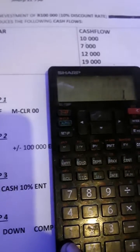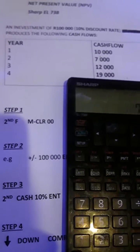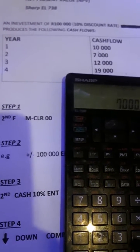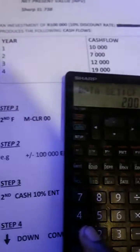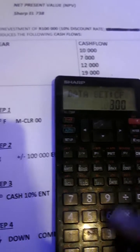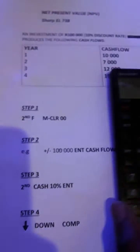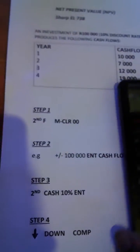The first one is ten thousand, enter. Second one is seven thousand, enter. Third one is twelve thousand, enter. The fourth one is nineteen thousand, enter.